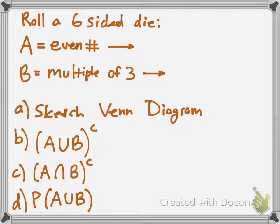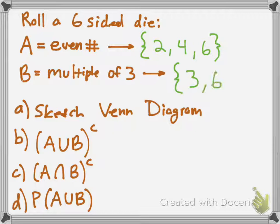So you roll a six-sided die, and it says A is the event of getting an even number. So what's the sample space of getting an even number? The even numbers on a six-sided die are 2, 4, and 6. Those are the possible outcomes for an even number. Now, B says is a multiple of three. So a multiple of three would be 3 and 6. Those are the only two options. So these are your sample spaces for A and B.